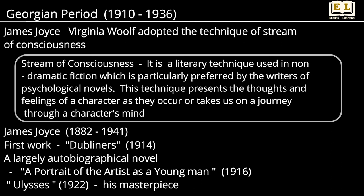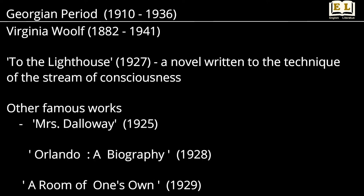Writers like James Joyce and Virginia Woolf adopted the technique of Stream of Consciousness and popularized it. James Joyce's first work is Dubliners, followed by a largely autobiographical novel, A Portrait of the Artist as a Young Man. Ulysses is his masterpiece. Virginia Woolf's To the Lighthouse is a novel written using the technique of stream of consciousness. Other famous works include Mrs. Dalloway, Orlando: A Biography, and A Room of One's Own.